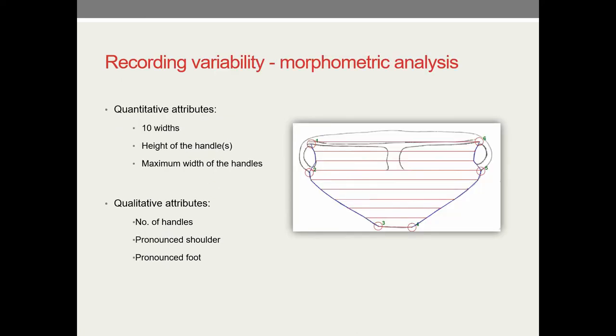We used mathematics and statistics to seriate the ceramic vessels. Here you can see some of the attributes that we recorded during our analysis. We have taken 10 widths of the vessel which would approximate the vessel shapes. We also measured the height of the handles and the maximum width of the handles where possible, and standardized all the measures. We also taken some qualitative attributes as you can see.